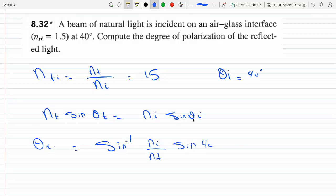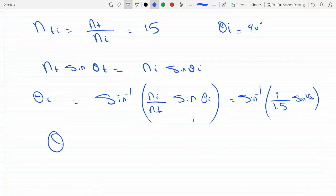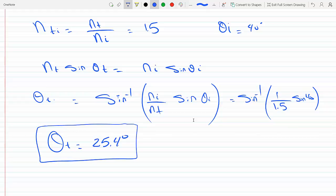This equals inverse sine of (1/1.5) times sin 40. Plugging this into the calculator, we get θ₂ equals 25.4 degrees.